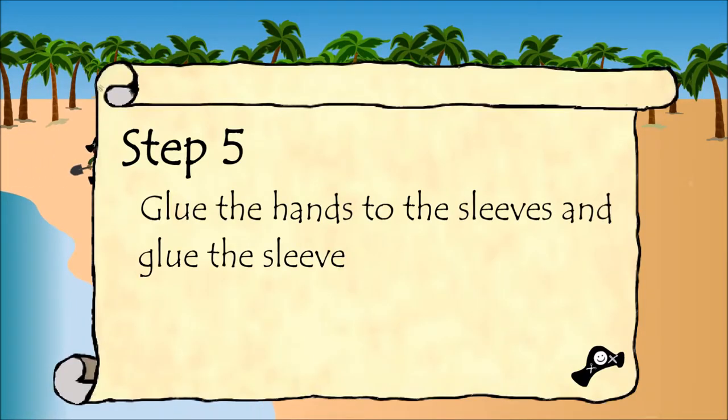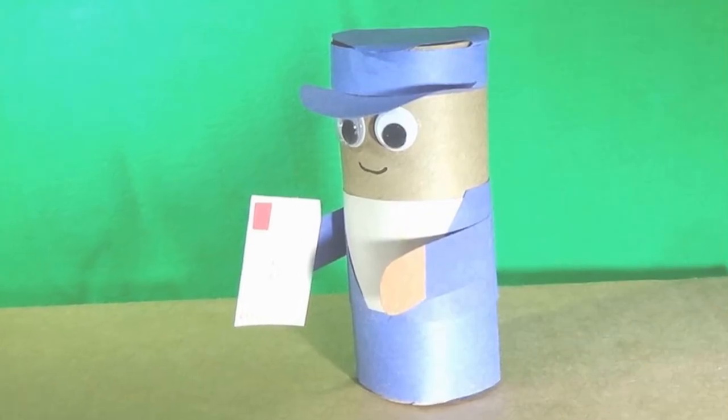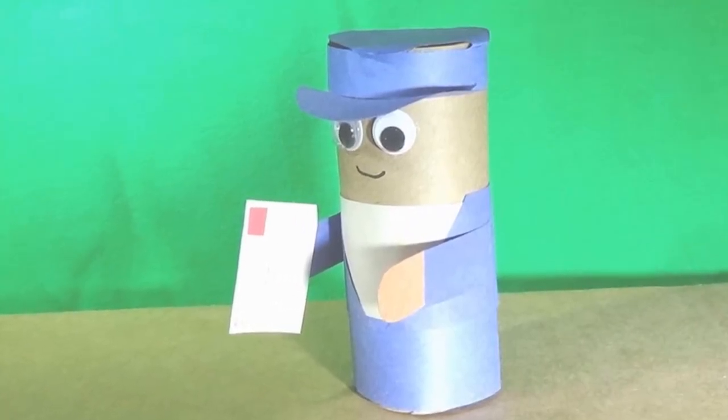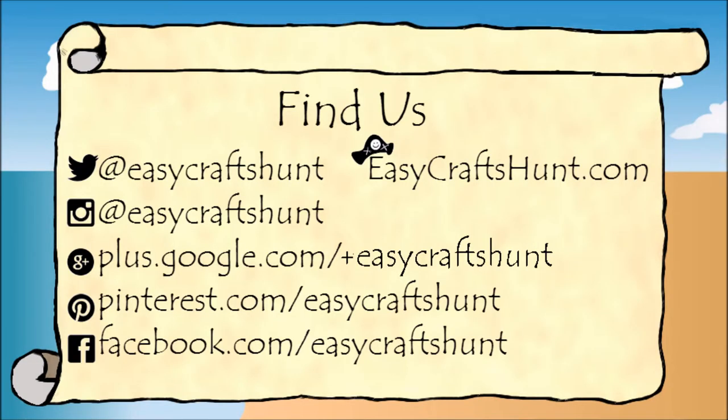Step five: glue the hands to the sleeves and glue the sleeves to the jacket. Finally, glue the letter to one of the mail carrier's hands. Find us on your favorite social media website and at easycraftshunt.com.